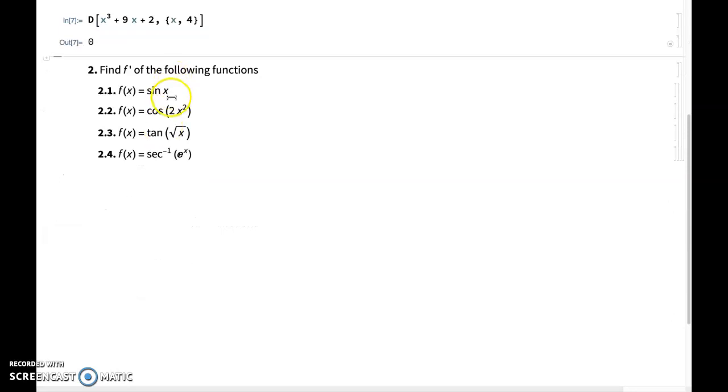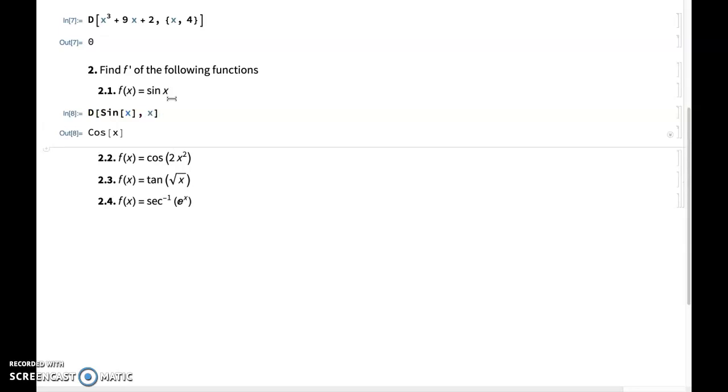The same thing exactly could be done for trigonometric functions. So I write D and then remember that sine of x itself is a Mathematica command, so you have to write the first letter, the S, in uppercase letters. So sine of x and then comma with respect to x, I get cosine of x.